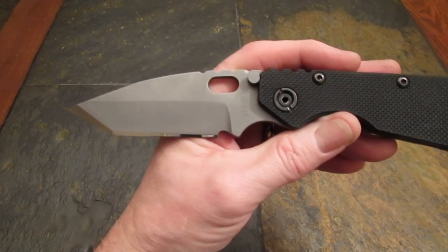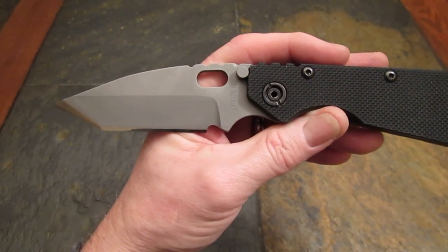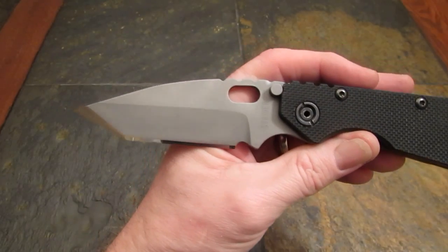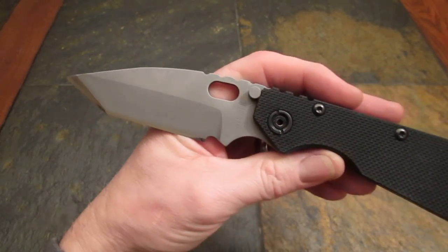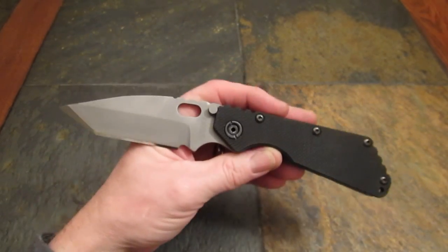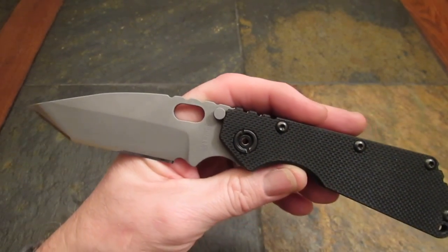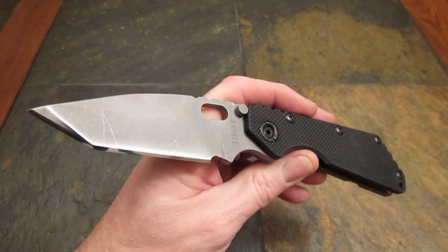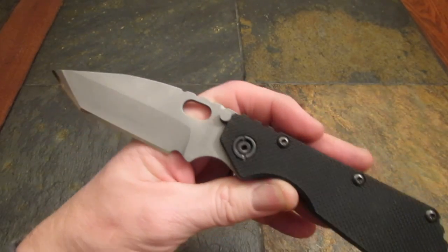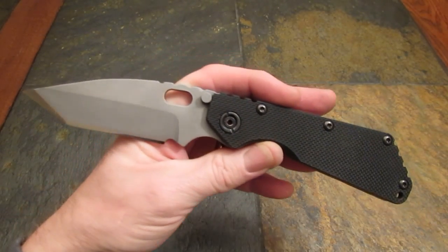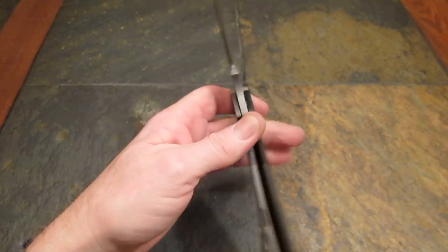Hi gang, Rob here. It's the evening of 19 January 2014. Got a knife in today, actually not a little knife, a real big knife for sharpening. This is a Strider SMF, the big brother of the Strider folding tactical knife family.